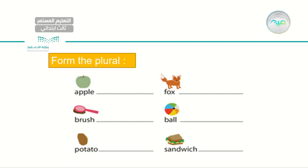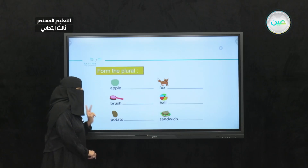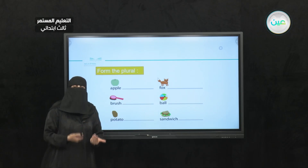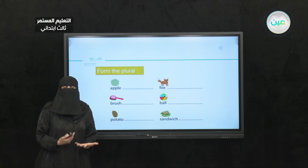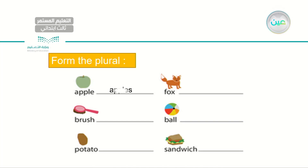Now try to give me the plural of these nouns. As you can see, I have one of each: an apple, a brush, a potato, a fox, a ball, and a sandwich. Let's try to form the plural and remember what changes we need to make in certain cases. For example, apple — the plural is apples. We just add S. Apples.